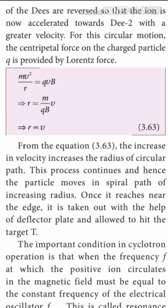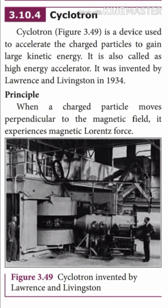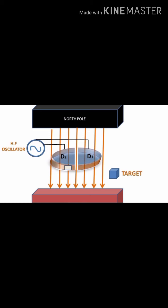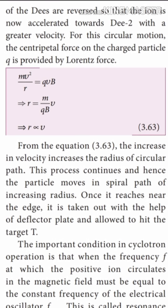The particle travels a semicircular path. The centripetal force is created by the Lorentz force. The principle is that the charged particle moves inside the magnetic field and Lorentz force is produced. Lorentz force provides the necessary centripetal force. Setting centripetal force equal to Lorentz force, we get R = mv divided by Qb, which means R is directly proportional to v. This is equation number 3.63.